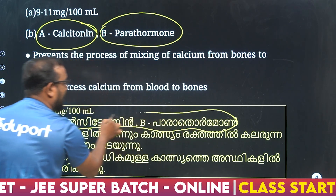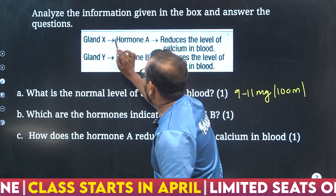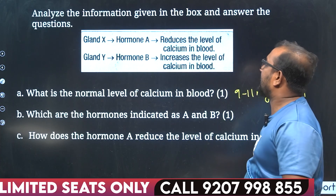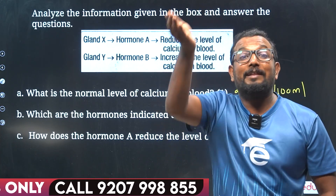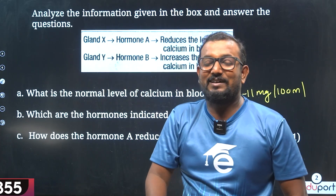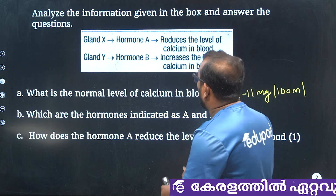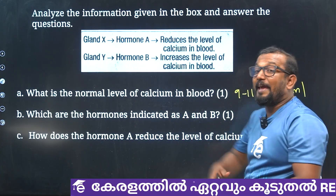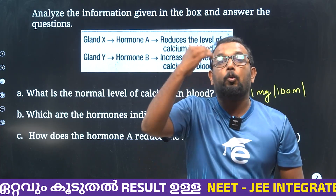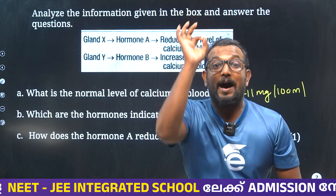Calcitonin. B is parathormone. Gland X — what is the hormone? That reduces the level of calcium. That is the correct hormone. Gland X is thyroid gland. Calcitonin — it reduces the calcium. When calcium level in blood increases, the hormone level in our body also increases.